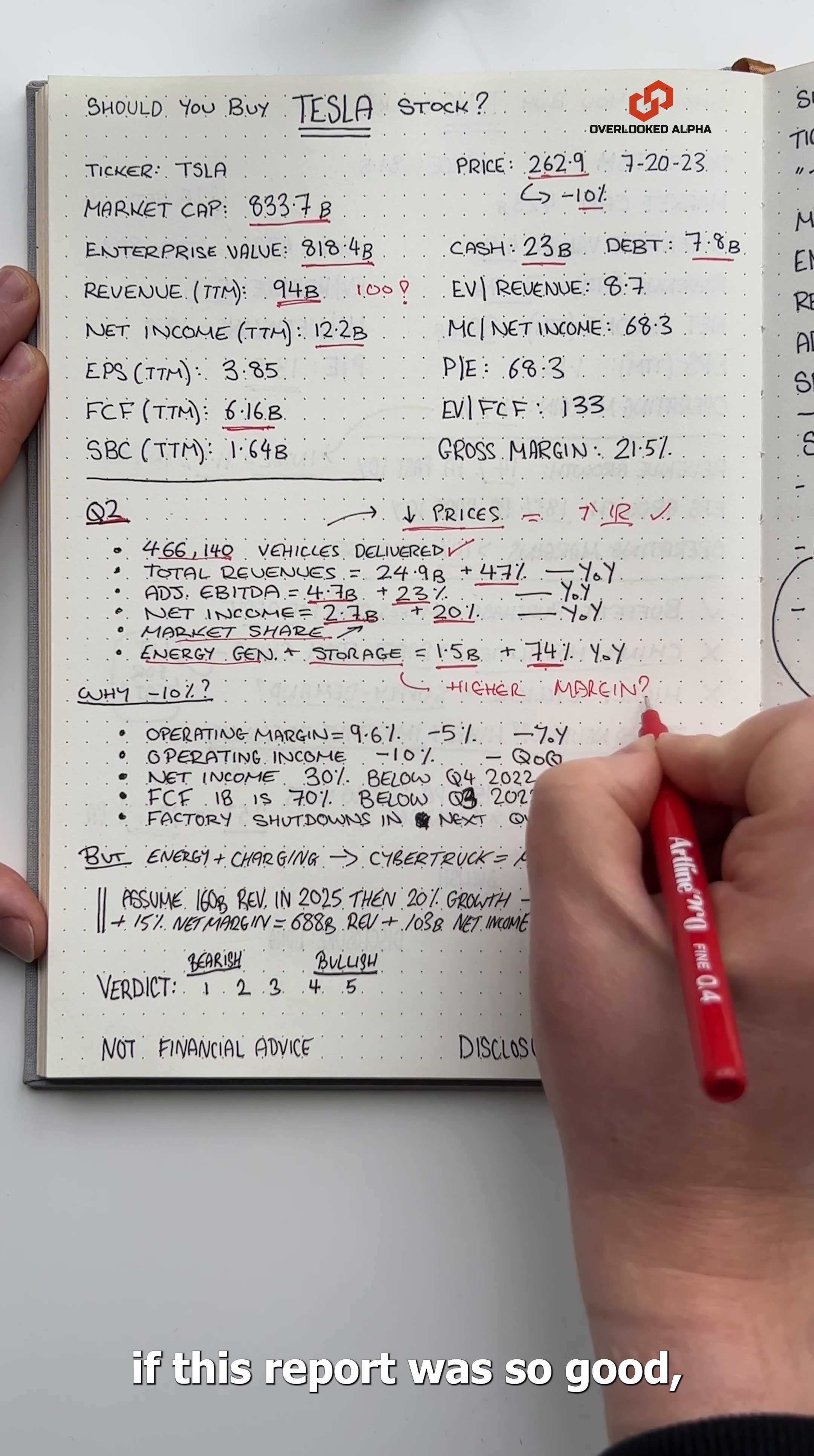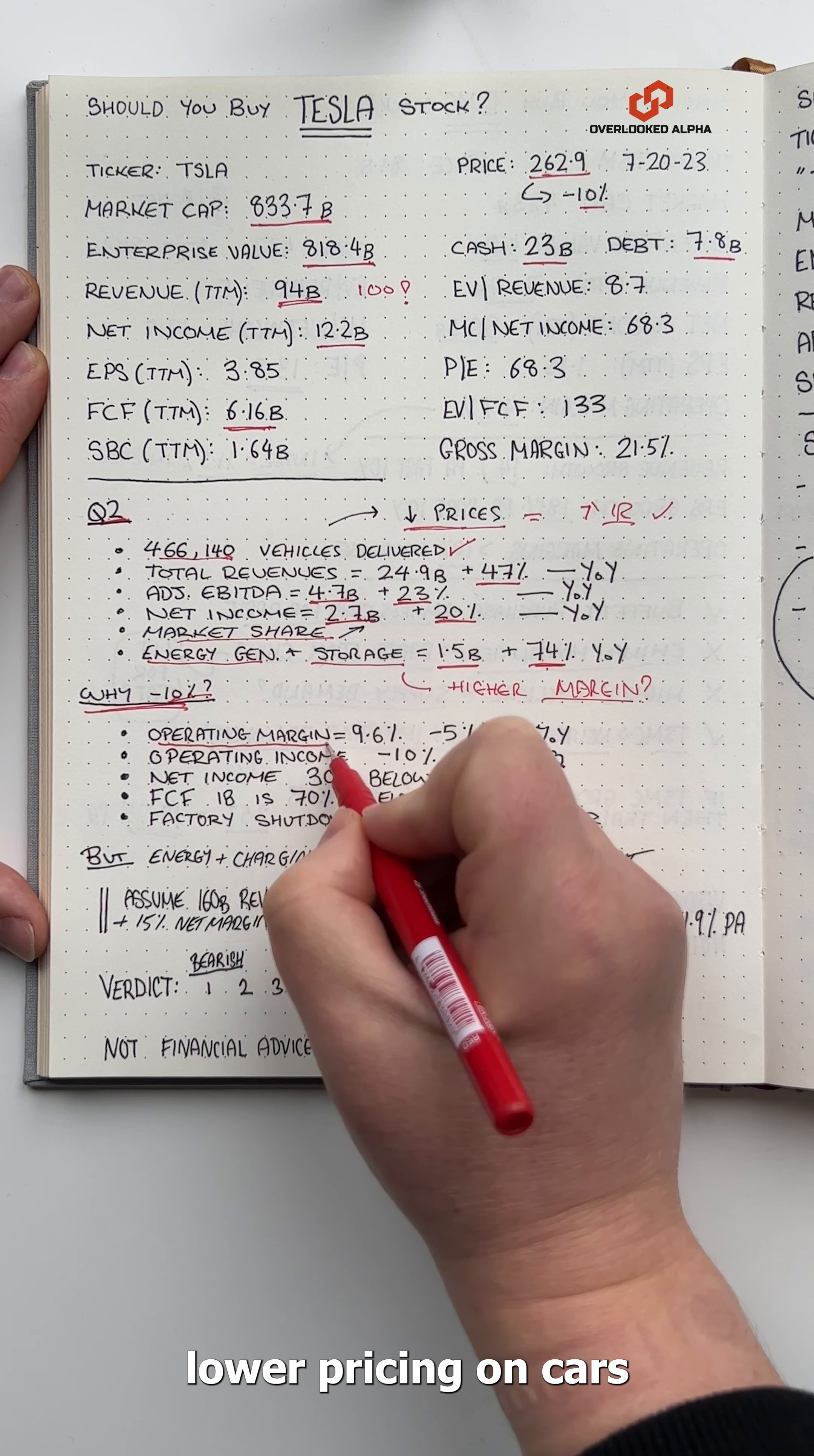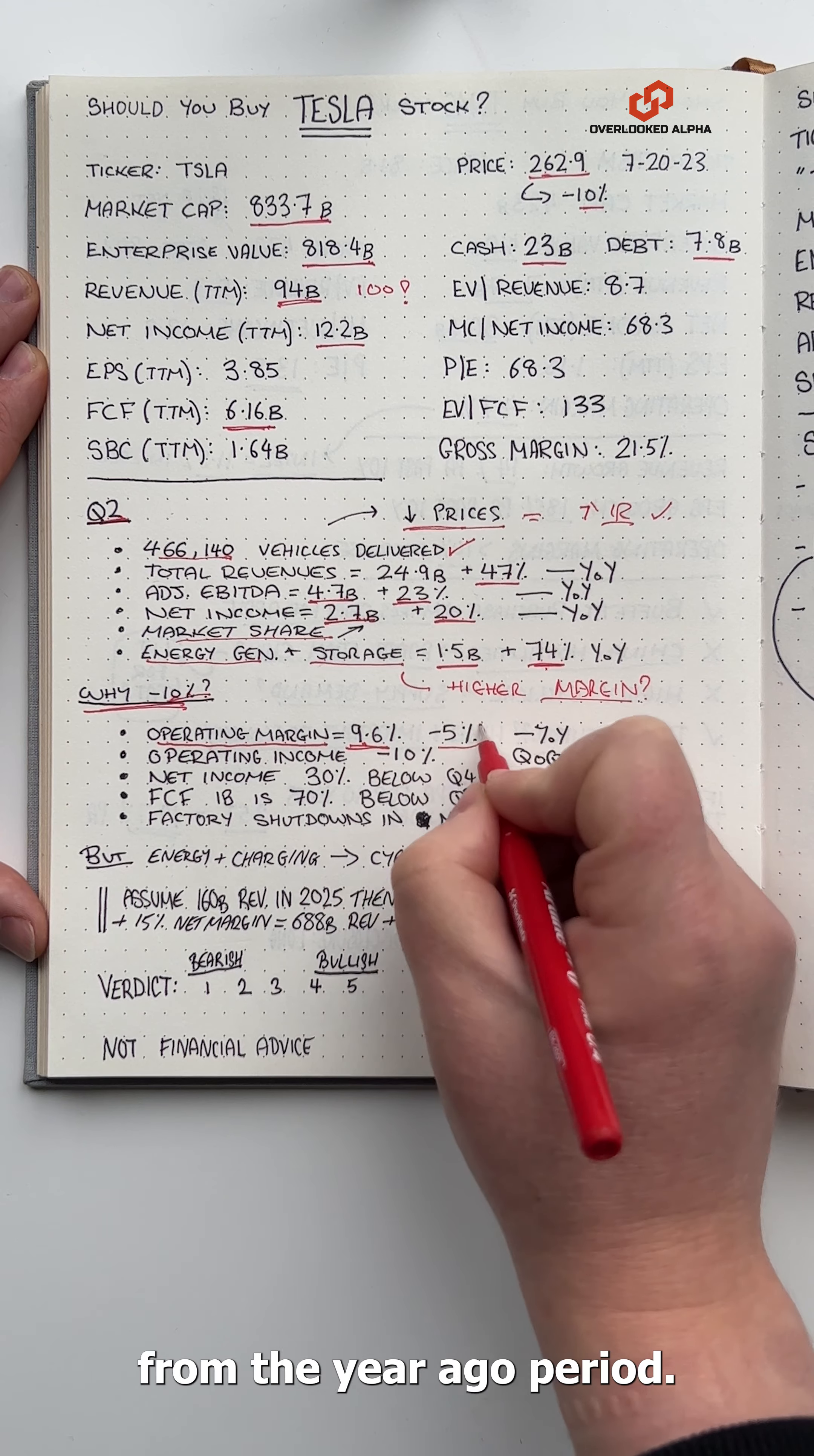The question is, if this report was so good, then why did the stock fall 10%? The biggest reason is operating margins. Although revenues were up, lower pricing on cars meant that operating margins fell to under 10%, which is a 5% decrease from the year ago period.